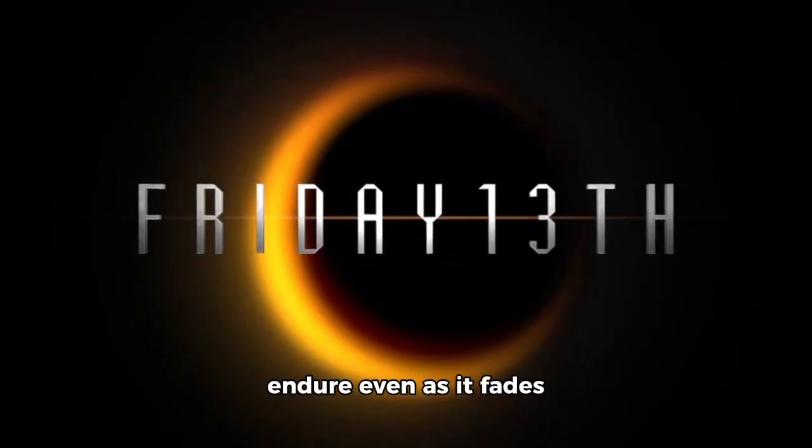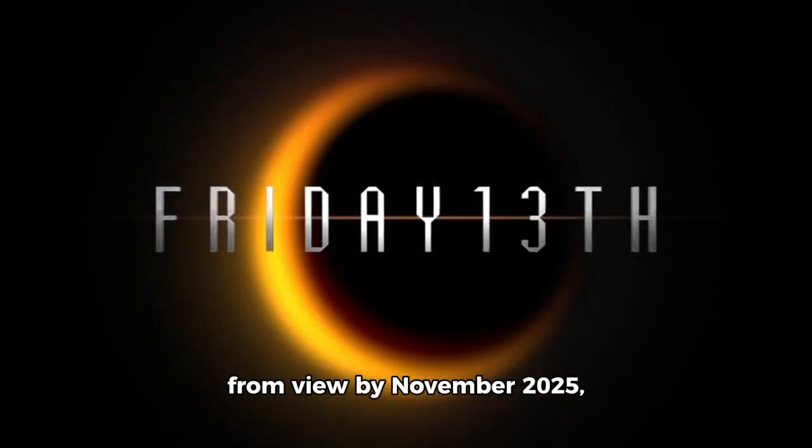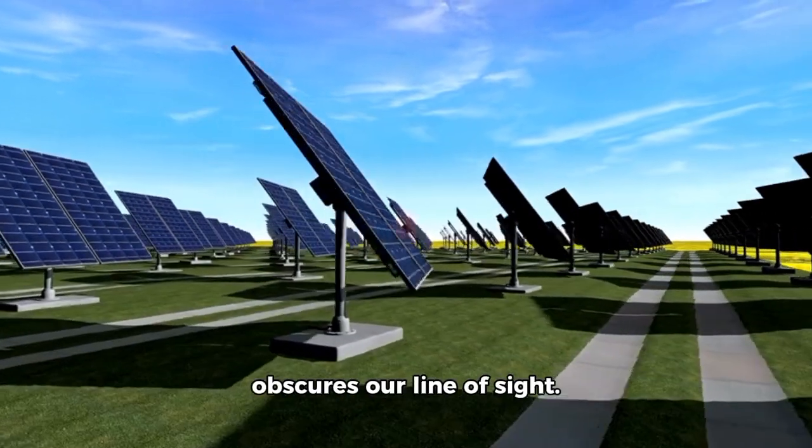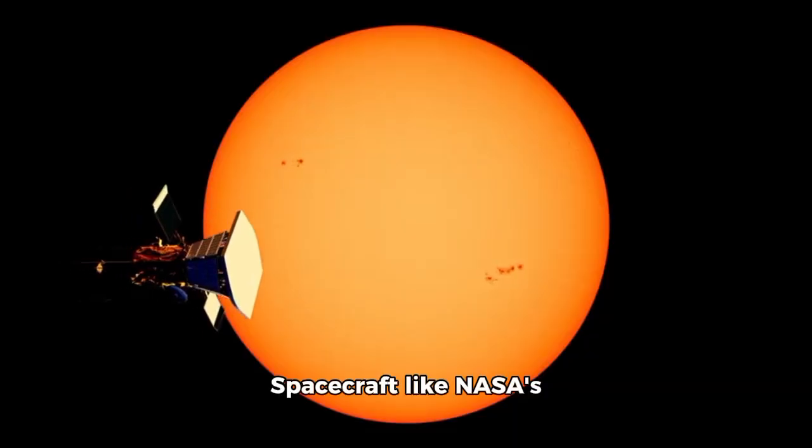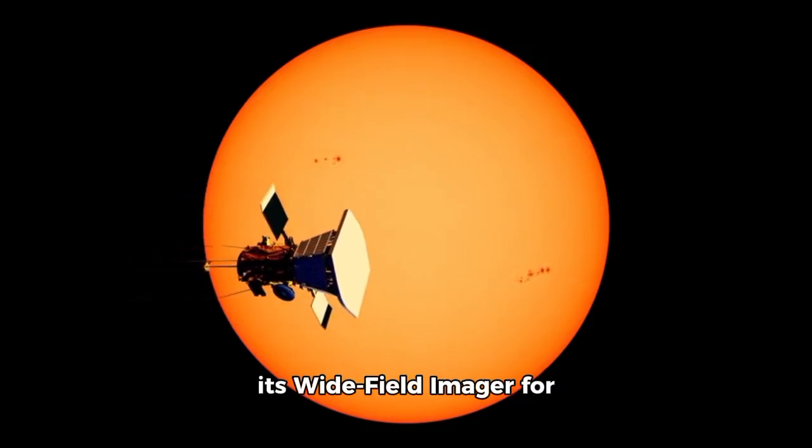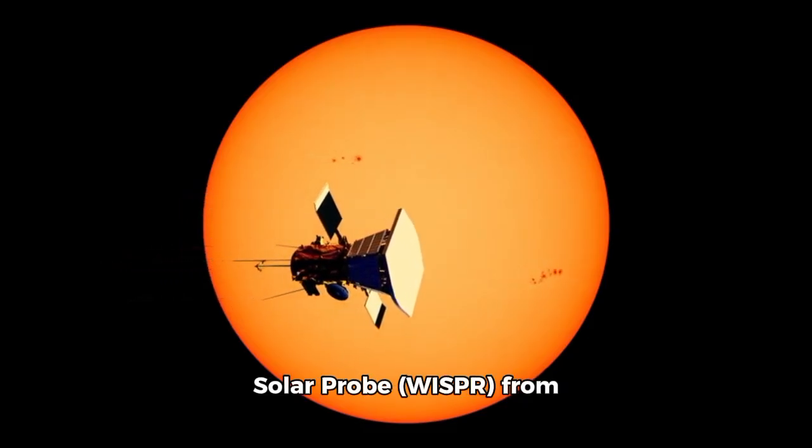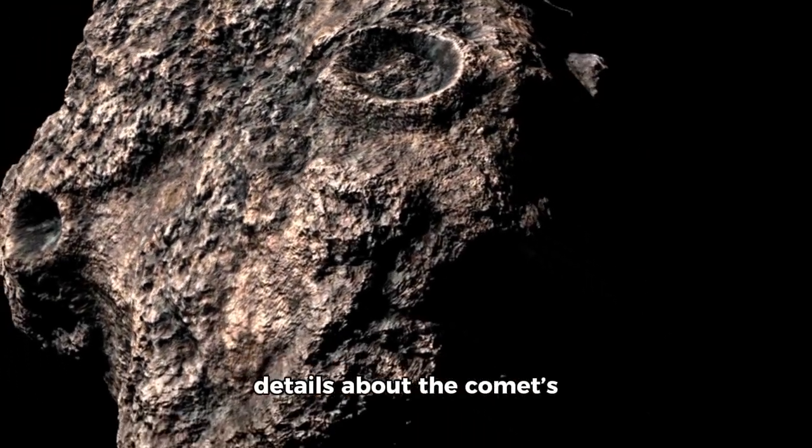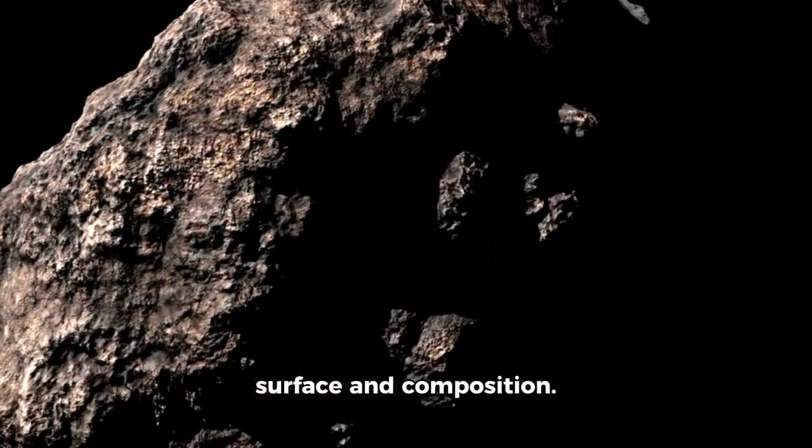3IATLAS's legacy will endure even as it fades from view by November 2025, entering a solar intersection where the sun obscures our line of sight. Spacecraft like NASA's Parker Solar Probe could record close-up data with its wide-field imager for Solar Probe WISPR from the end of September through early November. This may provide new details about the comet's surface and composition.